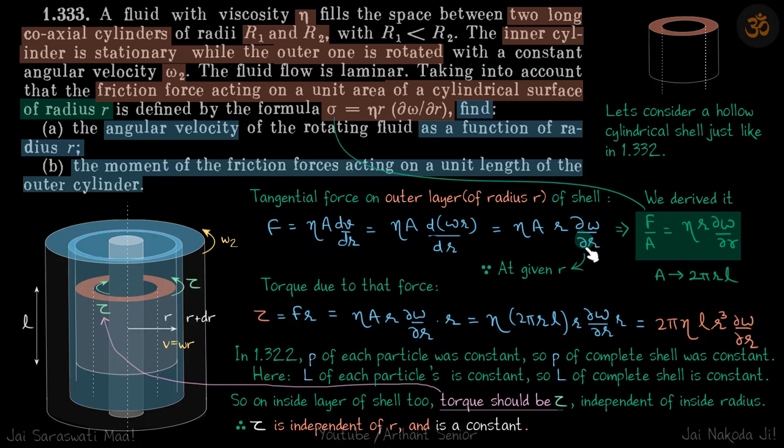It's the term d omega because at given r, so r is constant. So if we take area here, we get F by A equals eta r d omega by dr, which is the same formula they have given here. So this is the force acting per unit area of a cylindrical surface of radius r. And here A is of course 2 pi r l, the lateral surface of the cylinder.